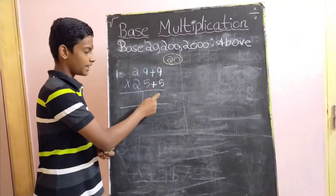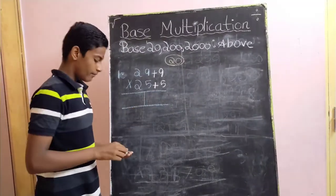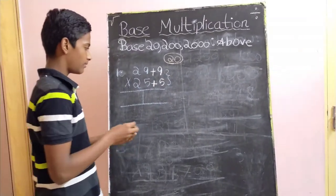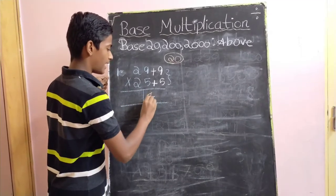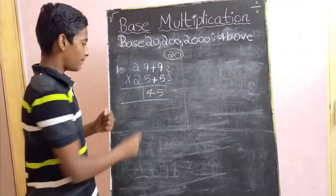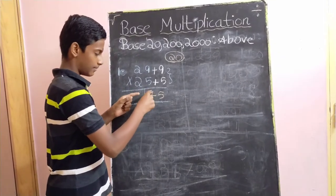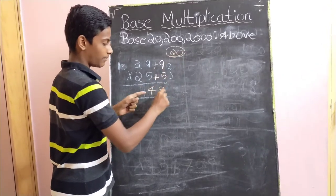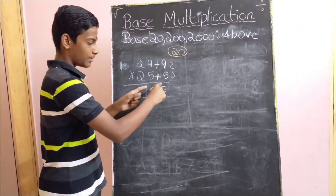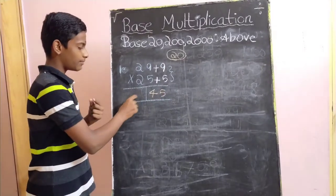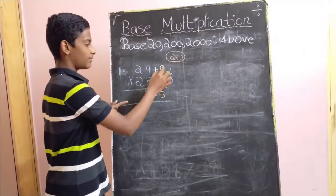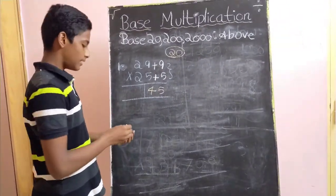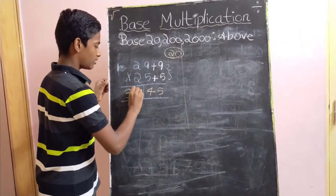As usual, for obtaining the right part of the answer, we must first multiply these two numbers, which gives us 45. The main thing is that we do not carry over this number — we must keep the number as it is. For obtaining the left part of the answer, we add this number with this number, or this with this, as both give us the same answer, that is 34.